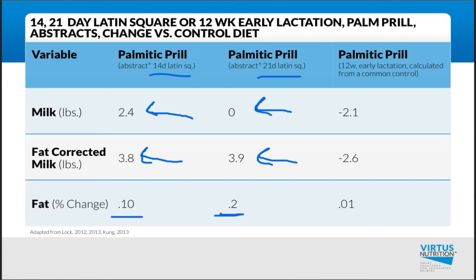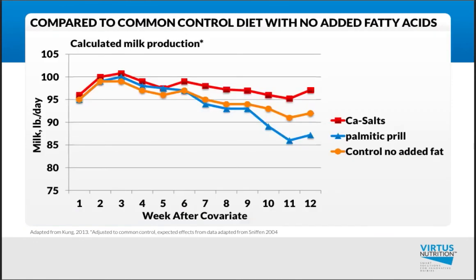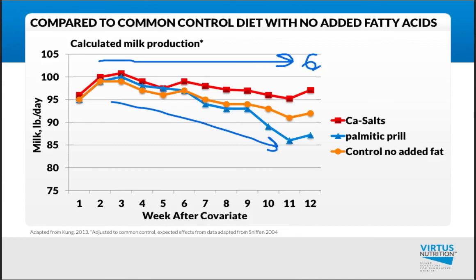Recently, a study was conducted looking at a 12-week longer-term early lactation study with palmitic prills, and things started to change. Fat test was the same as calcium salts against a control. When compared against a control, we actually had a negative response in fat-corrected milk. A chart showing this peer-reviewed research with a control line inserted indicates calcium salts versus a control over a 12-week period showed about a 6-pound fat-corrected milk response, while the palmitic prills actually had a minus 2-pound fat-corrected milk response versus the control. This implies that with longer-term studies, we're affecting persistency as we shift the fatty acid profile to more palmitic fatty acids.